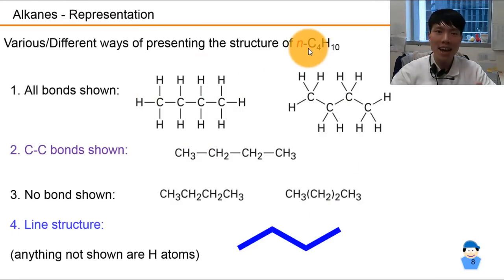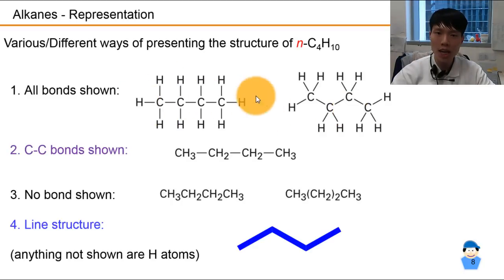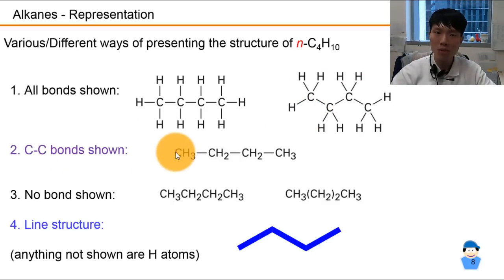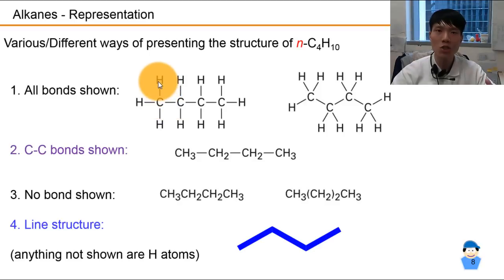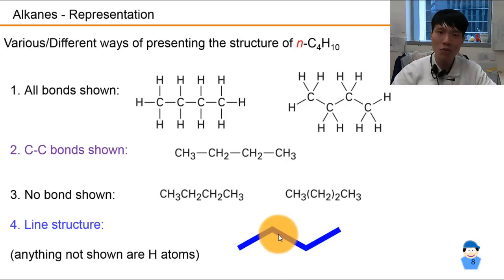There are a few ways of drawing alkanes. Take n-C4H10, your normal butane straight chain. Number one is with all bonds drawn — carbon from group 4 has four lines emerging out, hydrogen has one bond. Number two shows C-C bonds only, without showing the C-H bonds. Number three shows no bonds at all, because we know that carbon must connect to carbon and hydrogen just caps off the ends. The fourth way is the line structure, which is the one we prefer in this module — it's the most convenient and saves time. In line structure, we do not show any hydrogen atoms, because all junctions represent carbon — so one, two, three, four carbons.